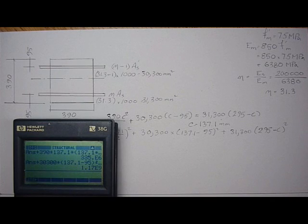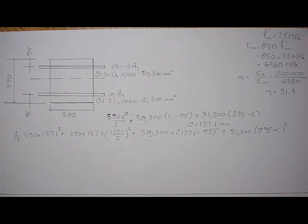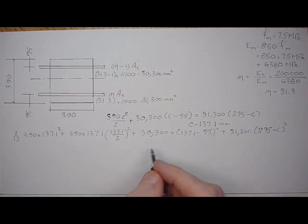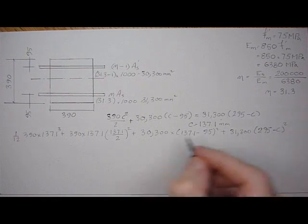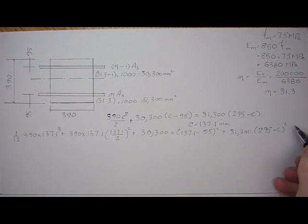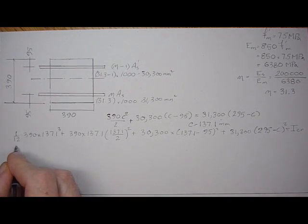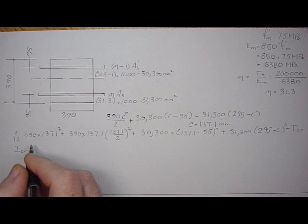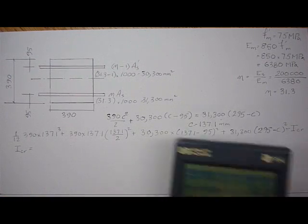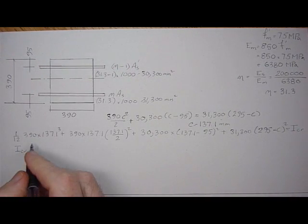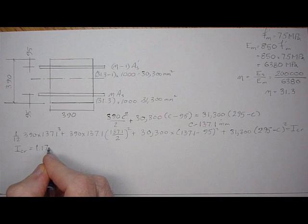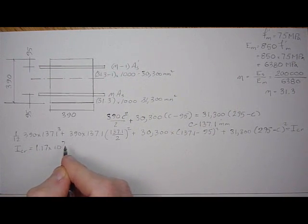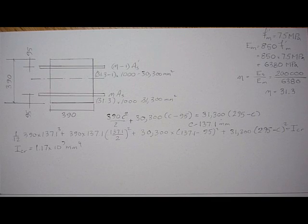So the I is 1.17 times 10 to the 9. This is I-cracked. So I-cracked is 1.17 times 10 to the 9 millimeters to the 4.